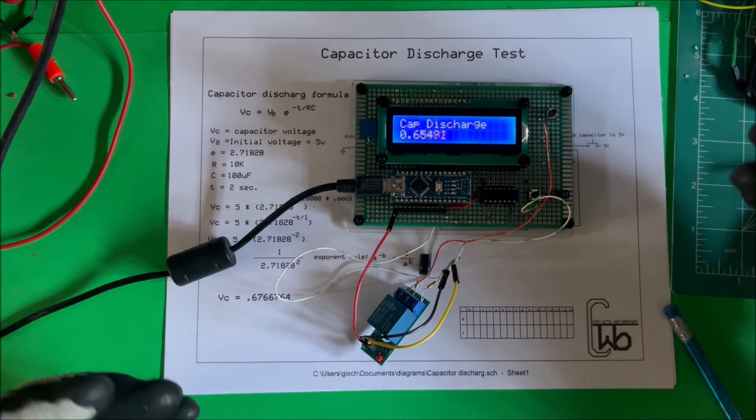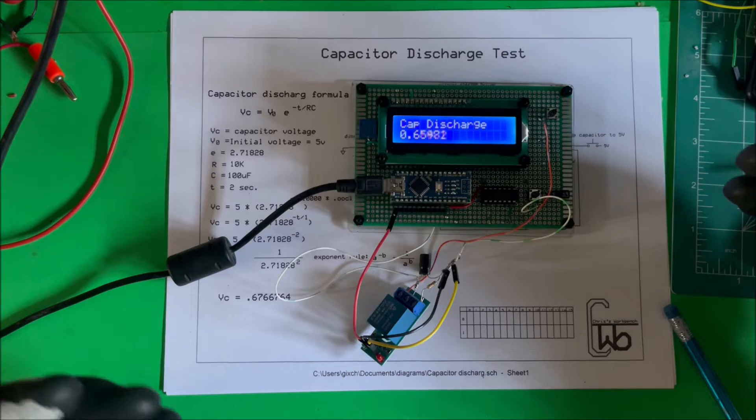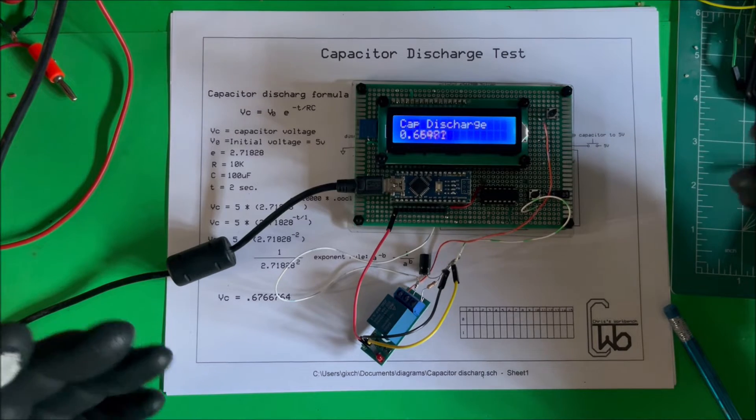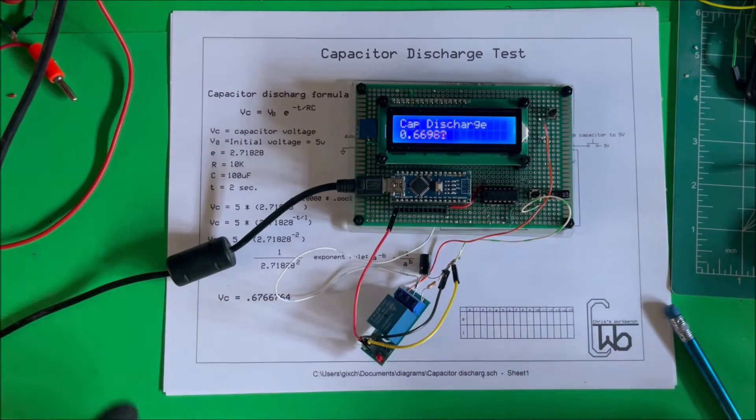So right now we have 0.65 volts on the capacitor, 0.66 volts, close to what did I say it was going to be? I calculated it at 0.67.